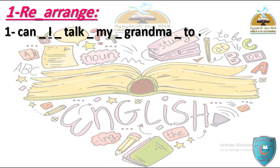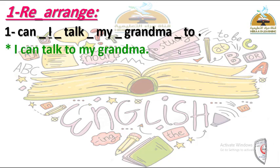حطت line تحت pronoun I علشان أبدأ به. الجملة: I can talk to my grandma - أنا أقدر أتكلم مع جدتي. بدأنا بـ I عشان تحتيها line، وعندي can ووراها verb talk كـ infinitive. وفي الآخر نحط full stop.